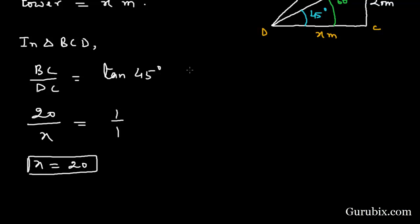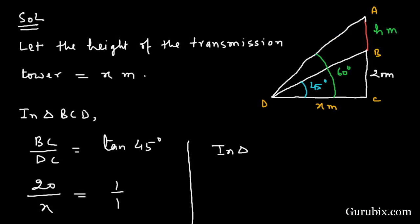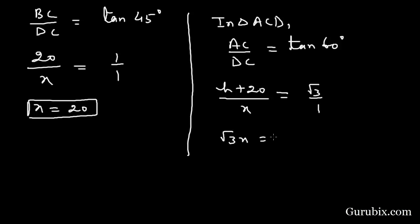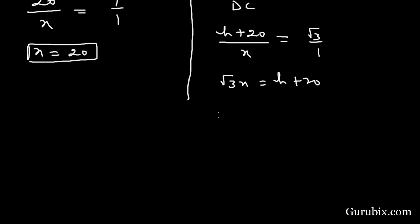Now we shall move to triangle ACD. In triangle ACD, we have AC over DC, which is the ratio for tan 60°. AC is h plus 20, DC is x, and tan 60° is square root of 3. So square root of 3 times x equals h plus 20.